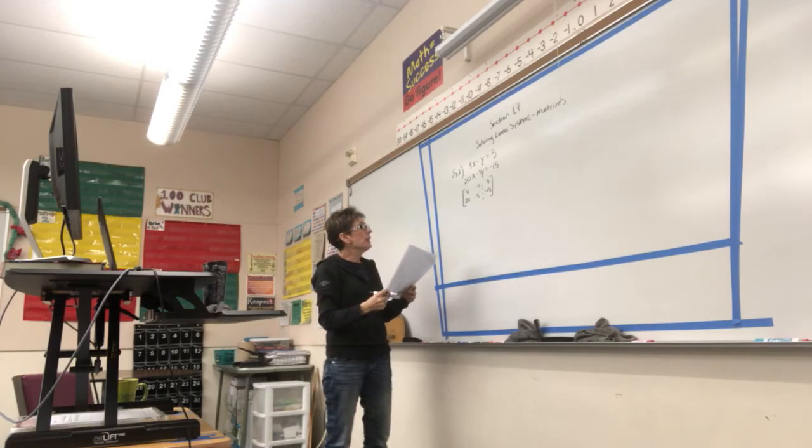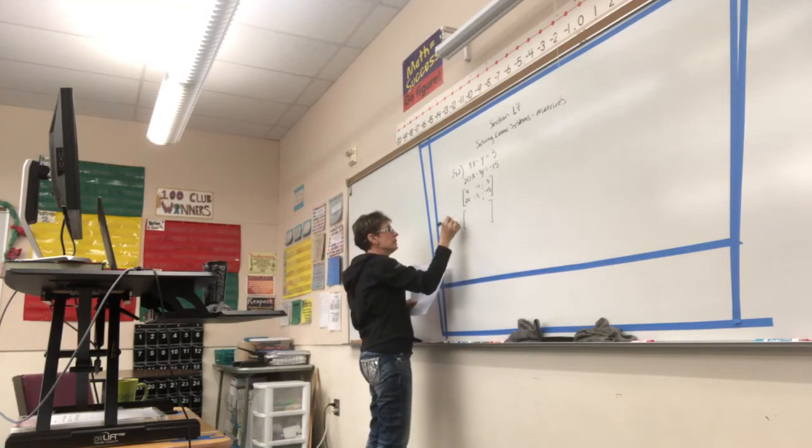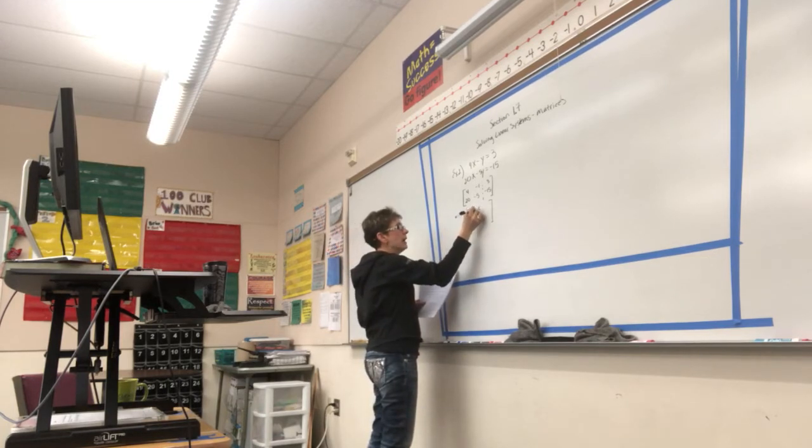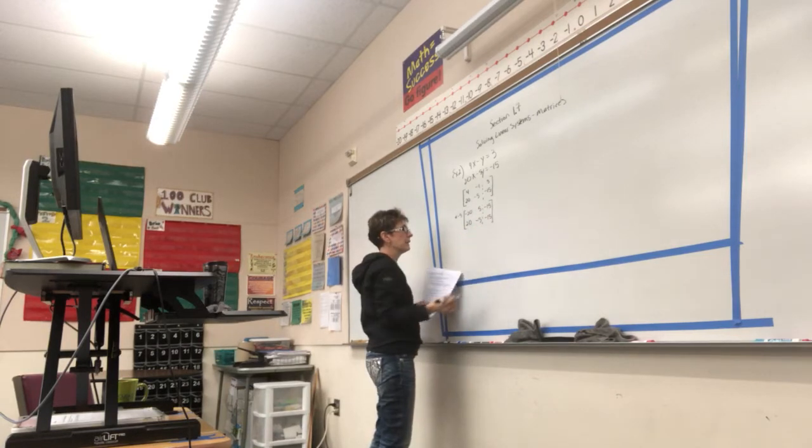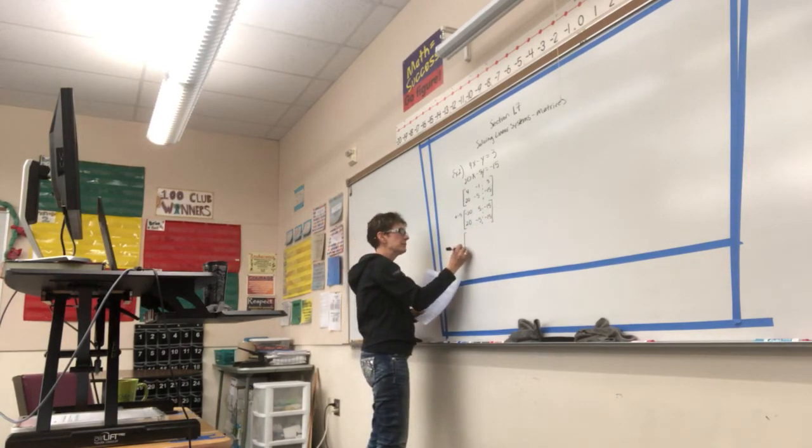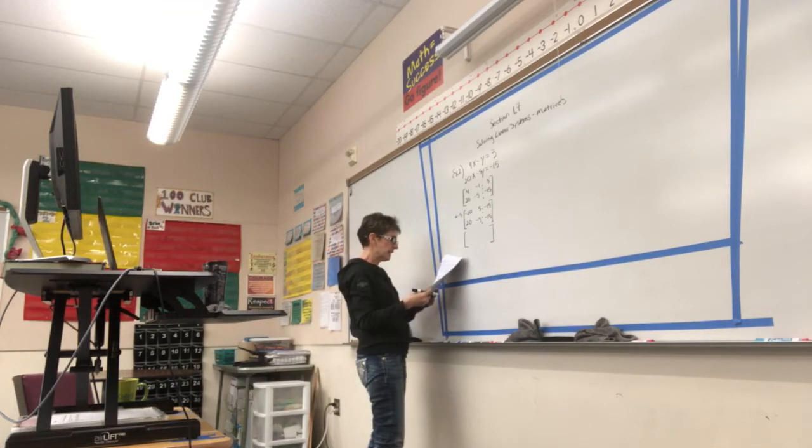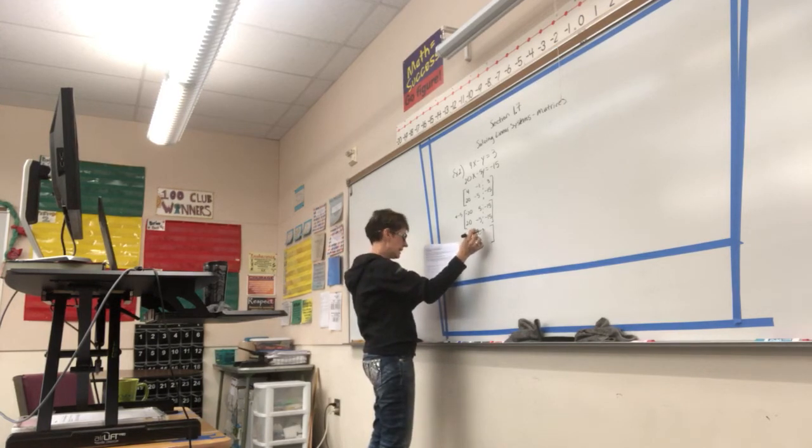Why don't we go ahead and multiply everything in the first row by negative 5. So, I'm going to do times negative 5. I'm going to get negative 20, positive 5, and negative 15. And then in the second row, I have 20, negative 5, and negative 15. Now, I'm going to add them together. Remember, I'm trying to make a 1 and 0 in the first row. When I add them together here, something interesting happens. I get 0, 0, and negative 30.